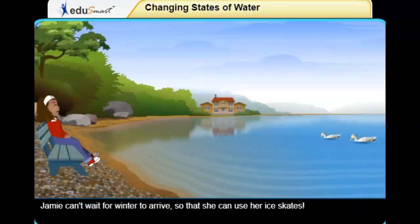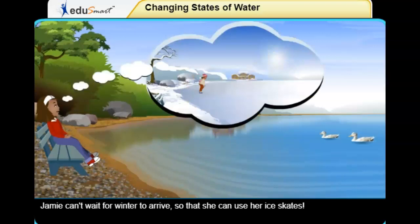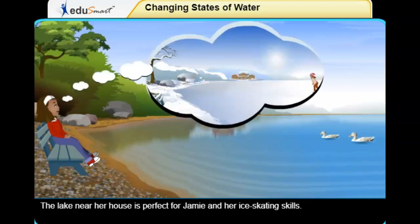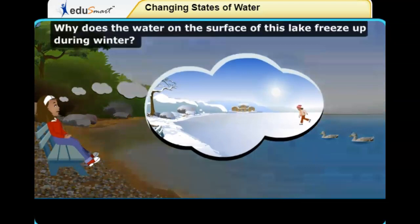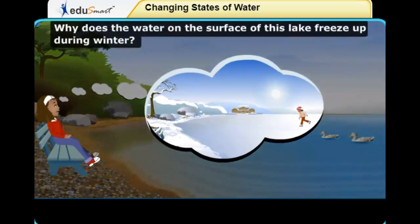Jamie can't wait for winter to arrive so that she can use her ice skates. The lake near her house is perfect for Jamie and her ice skating skills. Why does the water on the surface of this lake freeze up during winter?